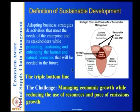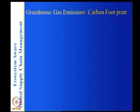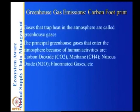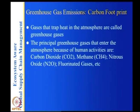The challenge is managing economic growth while reducing the use of resources and the pace of emissions growth. You want economic growth and social well-being, but you want to use a minimal amount of resources and emit as few emissions as possible. The principal greenhouse gases entering the atmosphere because of human activities are carbon dioxide, methane, nitrous oxide, and fluorinated gases.